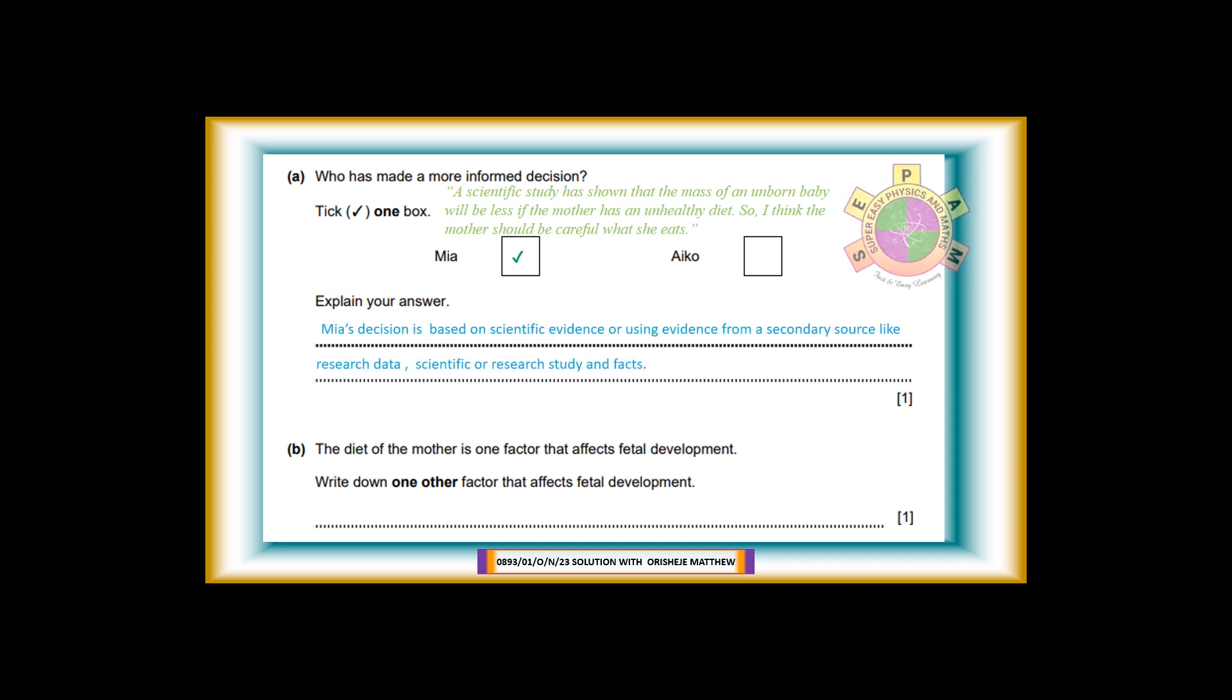5b. The diet of the mother is one factor that affects fetal development. Write down one other factor that affects fetal development. For 1 mark. Answer: Smoking, drugs, genes of mother or fetus, age of mother, health of mother, multiple births, medication of mother, oxygen intake of fetus, etc.